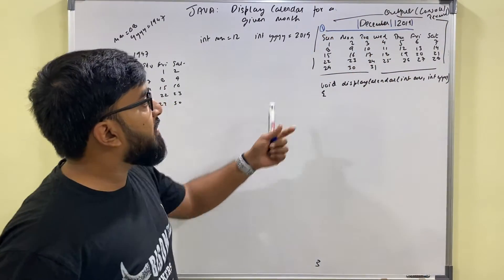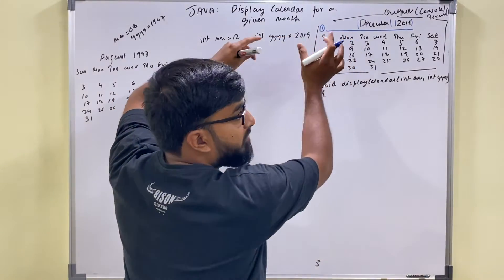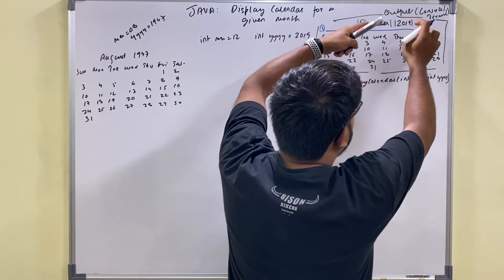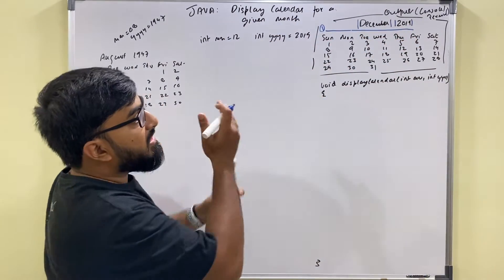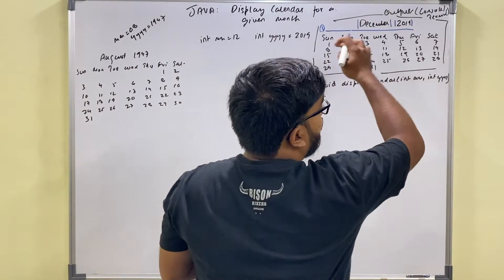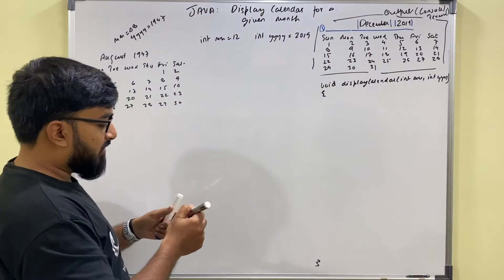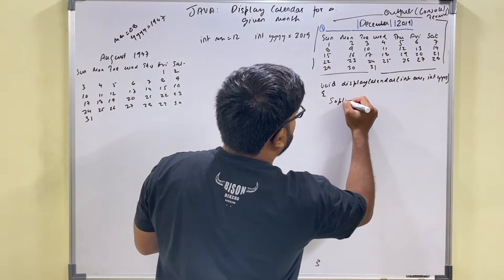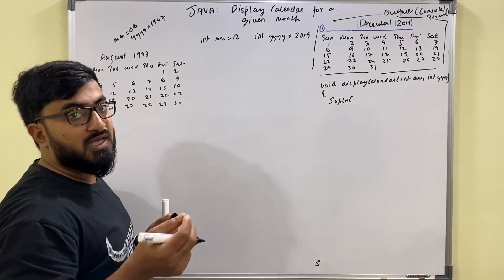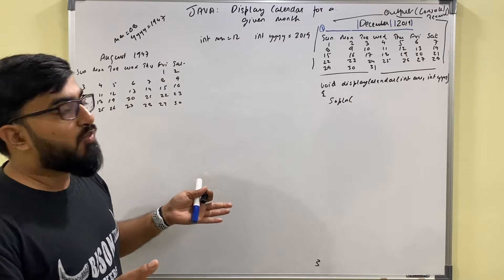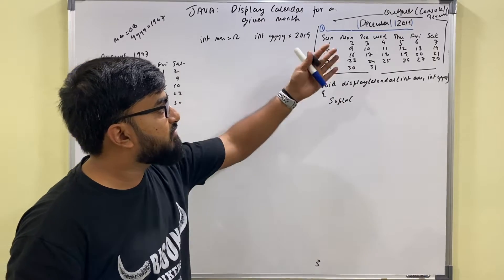The first line to print needs a certain amount of spaces so that the name of the month and the year comes in the center. For now I'll simply print December 2019 and shift it later. I have two ways to get the name of the month: write my own helper method or use the Calendar class method. I'll write a helper function: String getMonthName takes in a month number.